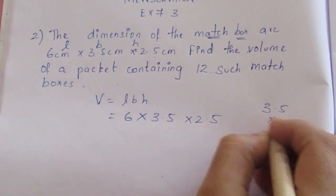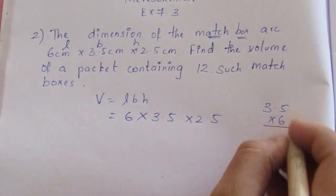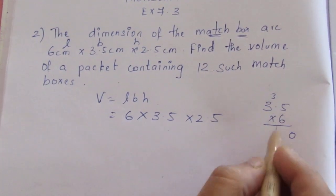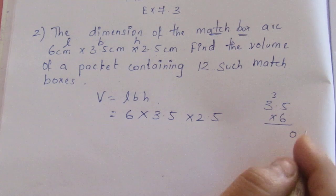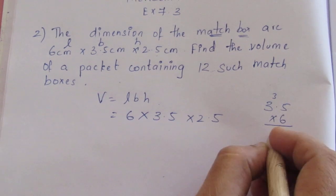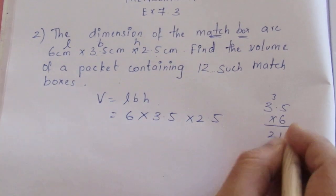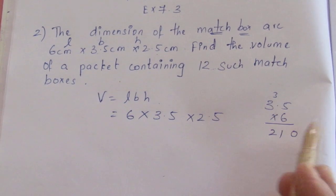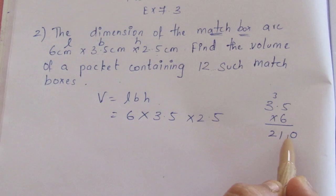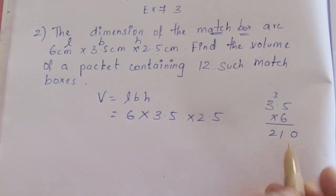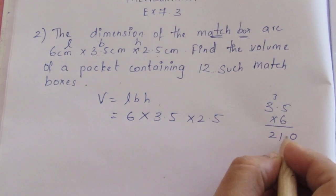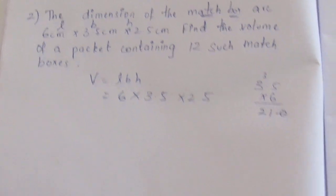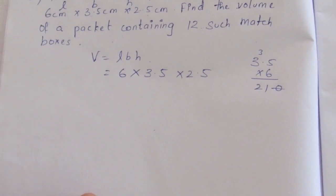Let's multiply it. 3.5 × 6: 5 × 6 is 30, 3 × 6 is 18, so 3.5 × 6 = 21. If you have decimal points, count them — so this gives us 21.0.